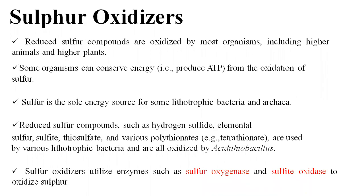The third major group of chemolithotrophs are sulfur oxidizers. The metabolism of Thiobacillus and Acidithiobacillus species has been studied in this case. This group of organisms oxidizes elemental sulfur, hydrogen sulfide, and thiosulfate. Sulfur oxidizers utilize enzymes such as sulfur oxygenase and sulfite oxidase to oxidize sulfur. Now we will go into detail on how they generate energy.